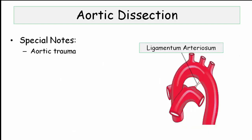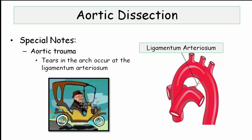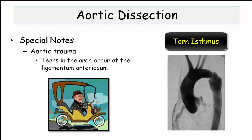There is one other disorder related to dissection: aortic trauma. Be aware that the ascending and descending aorta are relatively mobile compared to the arch. The arch is fixed in place by the ligamentum arteriosum, the fibrous remnant of the ductus arteriosus. In a high-speed deceleration injury, the ligamentum literally yanks a piece of the aorta off, creating a hole and rapid exsanguination.